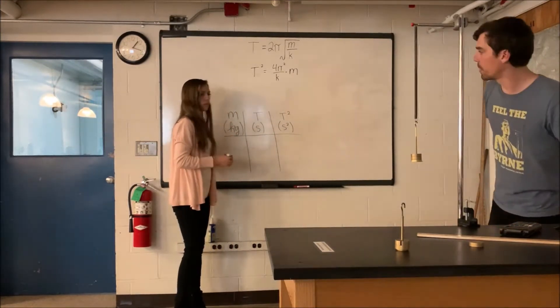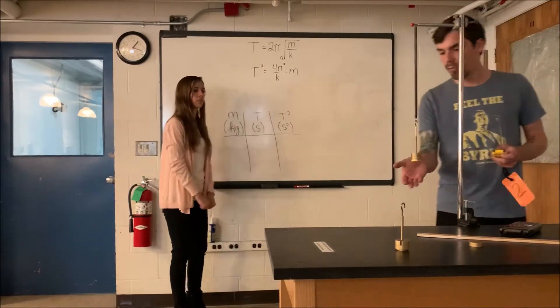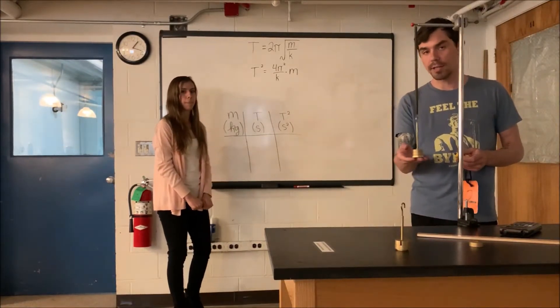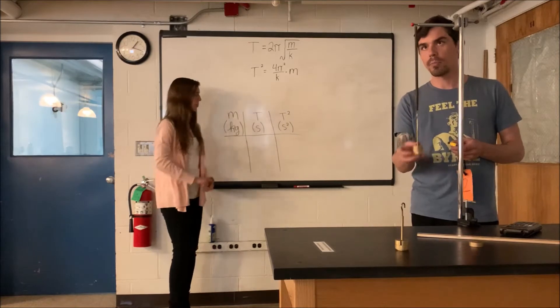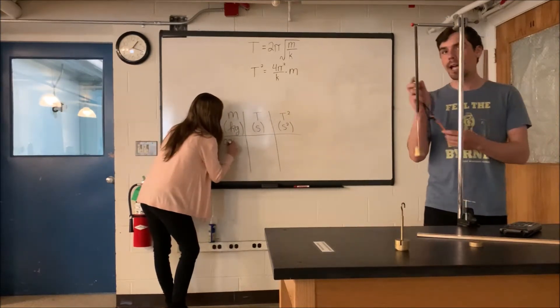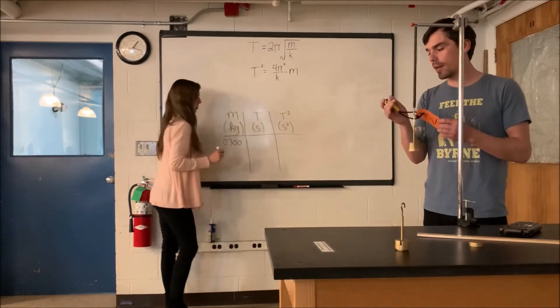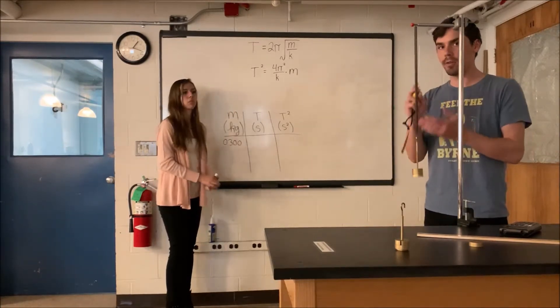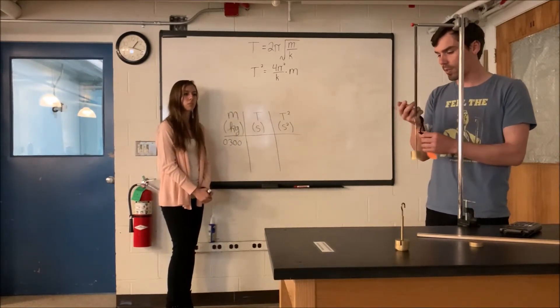I'm going to make a measurement to get the period for a 300 gram mass on the end of our spring. If I put this into harmonic motion, I'm going to measure the time of 10 oscillations, divide that number by 10, and that will be the period of one oscillation. Let's get this going.